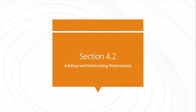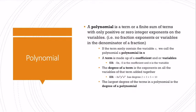So I want to give us a formal definition of a polynomial. A polynomial is a term, or a finite sum of terms, with only positive or zero integer exponents. So no negative exponents on our variables. If the term only contains a variable x, we would call it a polynomial in x. This is what we primarily are going to be working with, polynomials in x.